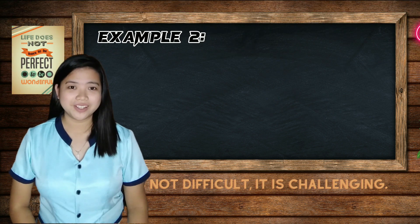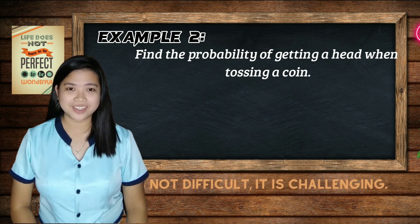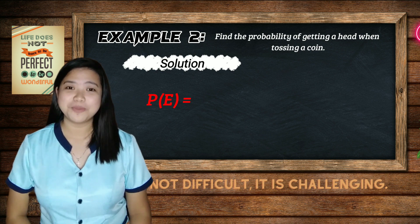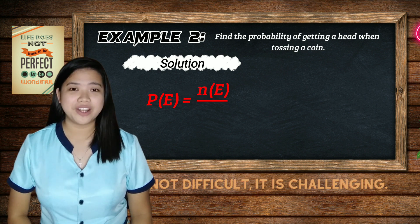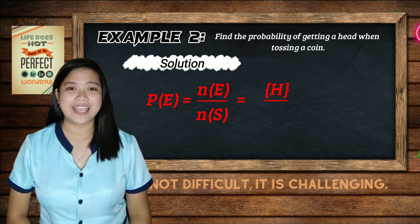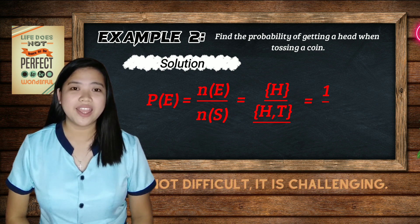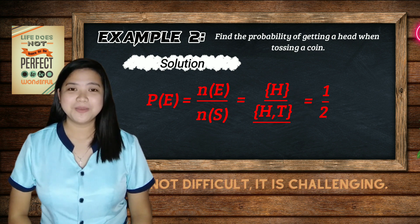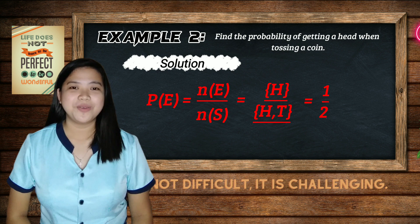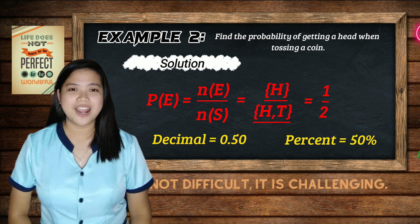Let's have another example. What is the probability of getting a head when tossing a coin? Using P(E) = N(E) / N(S): the favorable outcome is 1 (head), and the total outcomes are 2 (head and tail). So the probability is 1/2, or 0.50 in decimal and 50% in percentage.